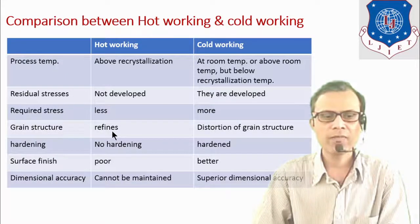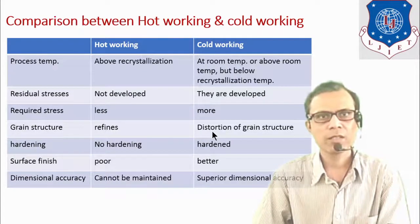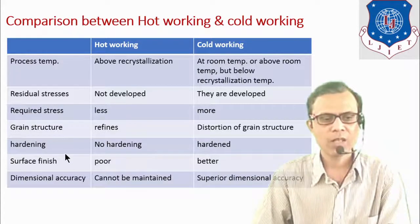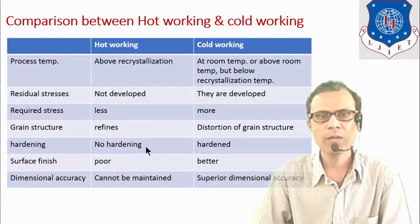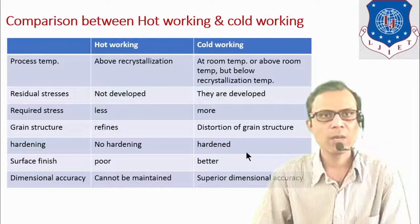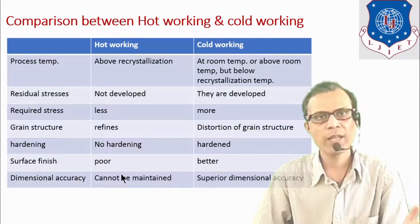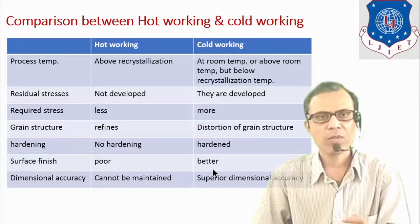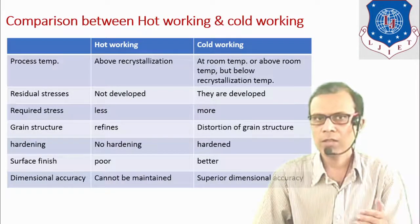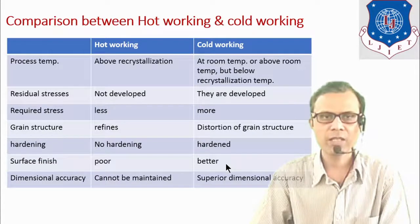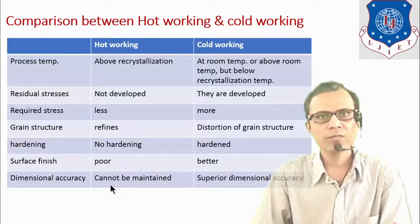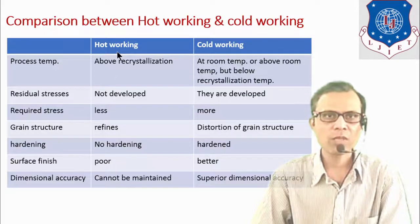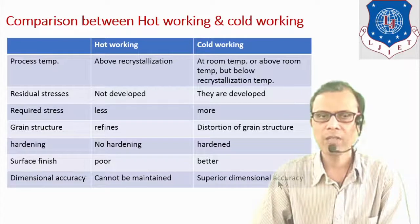Grain structure is refined at higher temperature in hot working, but in cold working there is a chance of distortion of the grain structure. No work hardening takes place in hot working, but in cold working the work may be hardened. Regarding surface finish, hot working is performed at higher temperature so there is always a chance of oxidation or scale formation, resulting in poor surface finish; cold working achieves better surface finish. Dimensional accuracy cannot be obtained in hot working, but superior dimensional accuracy can be obtained in cold working.